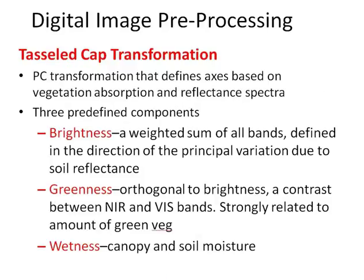One that we've already tried in our previous labs is a tasseled cap transformation. Tasseled cap was developed specifically to pull out information pertinent to vegetation classification or vegetation condition studies. It takes all of the common multispectral bands and adjusts them so that it can pull out information specifically about how bright each pixel is, how green each pixel is, and how wet each pixel is. It's literally transforming all of our original multispectral bands into three bands that give us very specific information.